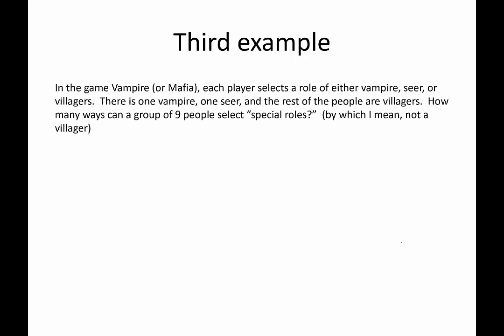One more example before we get to the formula. In the game of Vampire or Mafia, each player selects a role of either vampire, seer, or villager. There is one vampire, one seer, and the rest are villagers. How many ways, if there are nine people playing, could people be selected for the two special roles — vampire and seer? One of the nine people is going to be the vampire, then there are only eight other people who could be the seer. So we would say 9 times 8 equals 72. There would be 72 different combinations of two people having special roles in a game of nine players.